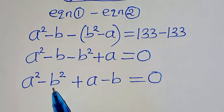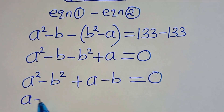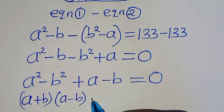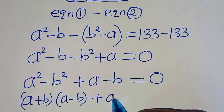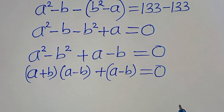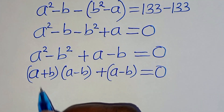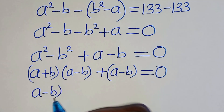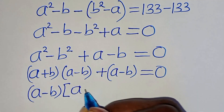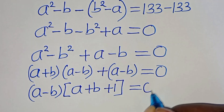Now, a squared minus b squared is the difference of two perfect squares, which can be expressed as (a plus b)(a minus b). So we have (a plus b)(a minus b) plus (a minus b) equals 0. We can factor out (a minus b), giving us (a minus b)(a plus b plus 1) equals 0.